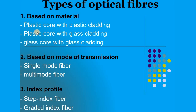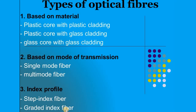An optical fiber has a core, a cladding, and a sheath surrounding both. The first category based on material is plastic core with plastic cladding, the second is plastic core with glass cladding, and the third is glass core with glass cladding. Based on mode of transmission, fibers are classified into single mode and multi-mode. Based on refractive index, they are classified into step index fiber and graded index fiber.